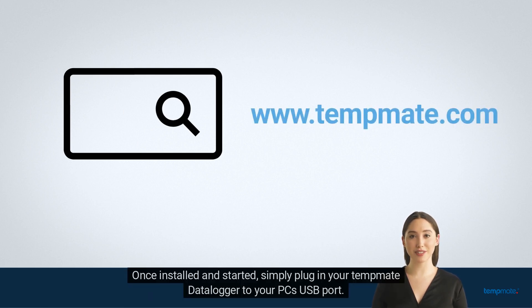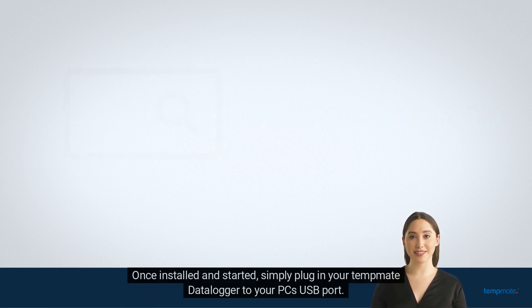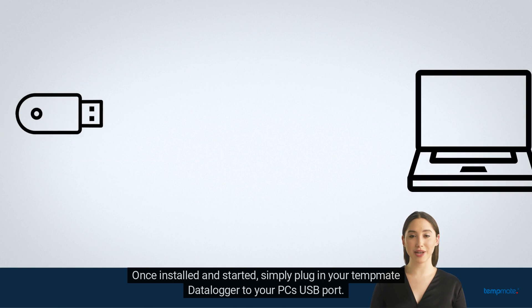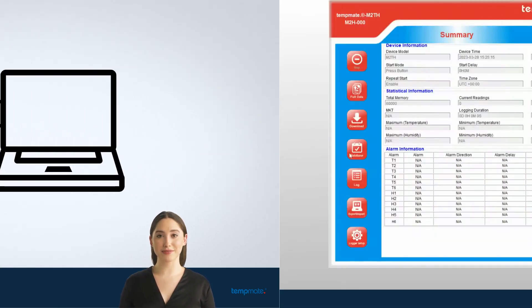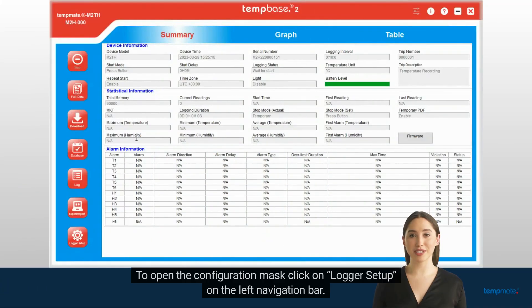Once installed and started, simply plug in your TempMet data logger to your PC's USB port. To open the configuration mask, click on Logger Setup on the left navigation bar.